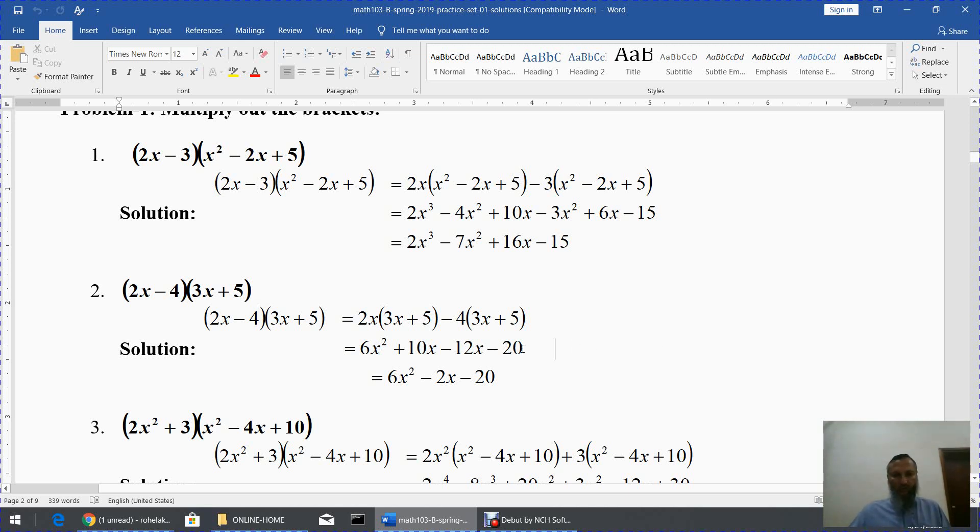But the x term: you have +10x here and -12x here. You are subtracting. Plus 10 minus 12. 10 - 12 is -2, so write -2x here. The last step is 6x² - 2x - 20, and this is the end of your answer. Nothing more has to be done and can be done. You are given two brackets, you open the brackets—we call it multiply out the brackets. Your final answer will be free from brackets.